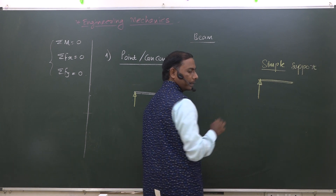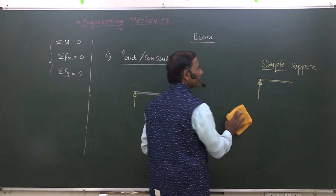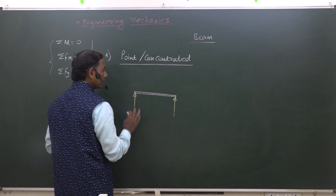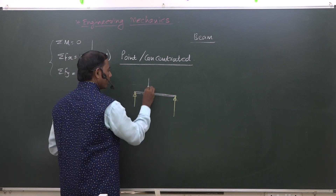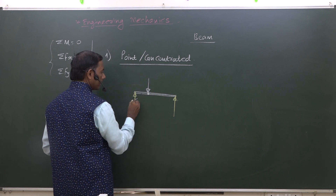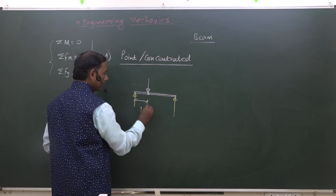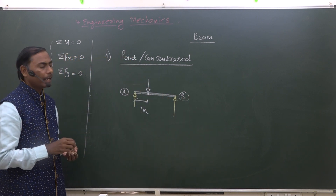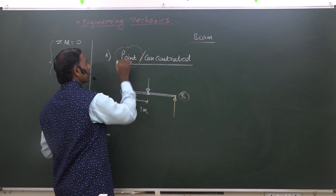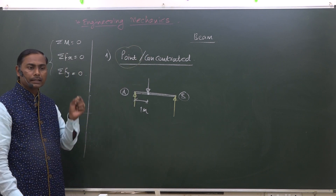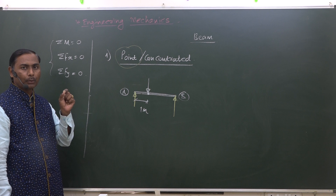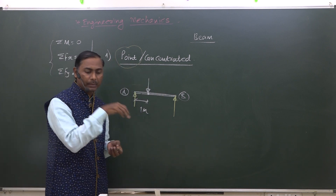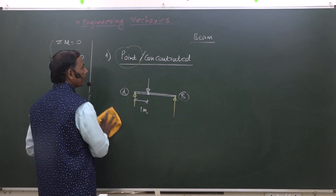Both supports are simple supports and there is a load applied at a point at some distance — maybe one meter from support A. This is called a point load. There is a concept of idealization from the first lecture: it is the assumption that loads are acting at a point. Actually they are not, but being concentrated — or supposed to be concentrated at a point — it is called a point load.